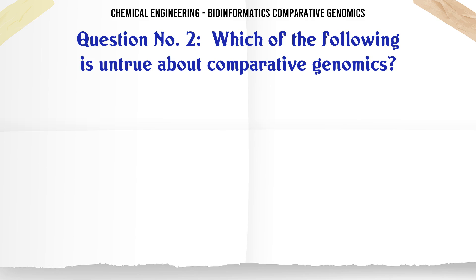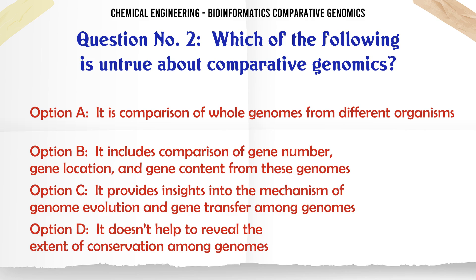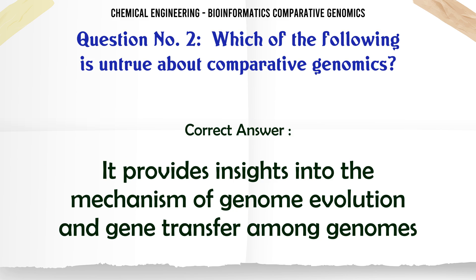Which of the following is untrue about comparative genomics? a. It is comparison of whole genomes from different organisms. b. It includes comparison of gene number, gene location, and gene content from these genomes. c. It provides insights into the mechanism of genome evolution and gene transfer among genomes. d. It doesn't help to reveal the extent of conservation among genomes. The correct answer is: it provides insights into the mechanism of genome evolution and gene transfer among genomes.